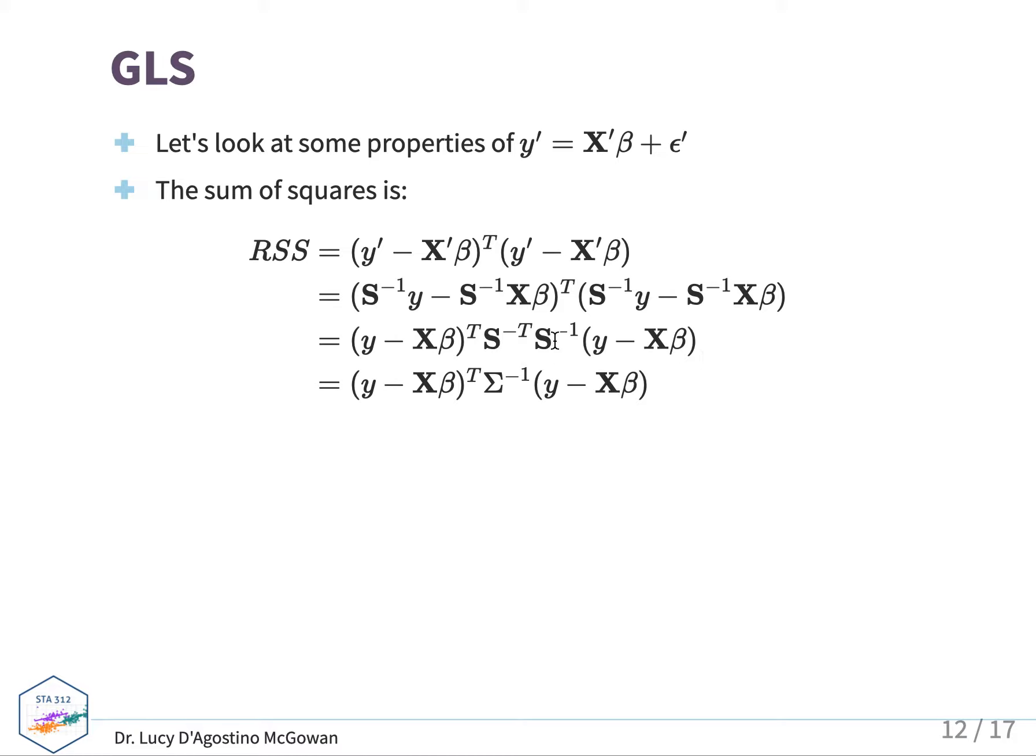If you recall, the whole point of doing this, of pulling out S and S transpose, was that S times S transpose equals sigma. And sigma is that known variance component that gives us the structure of variance between our errors.